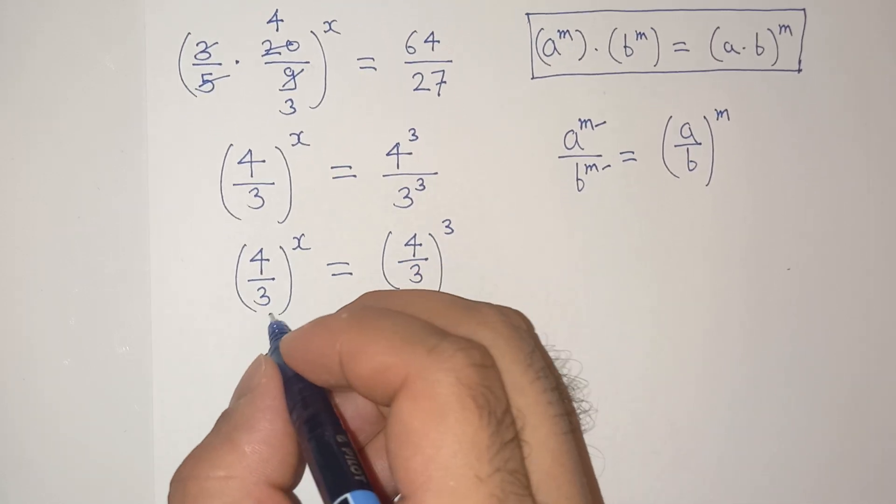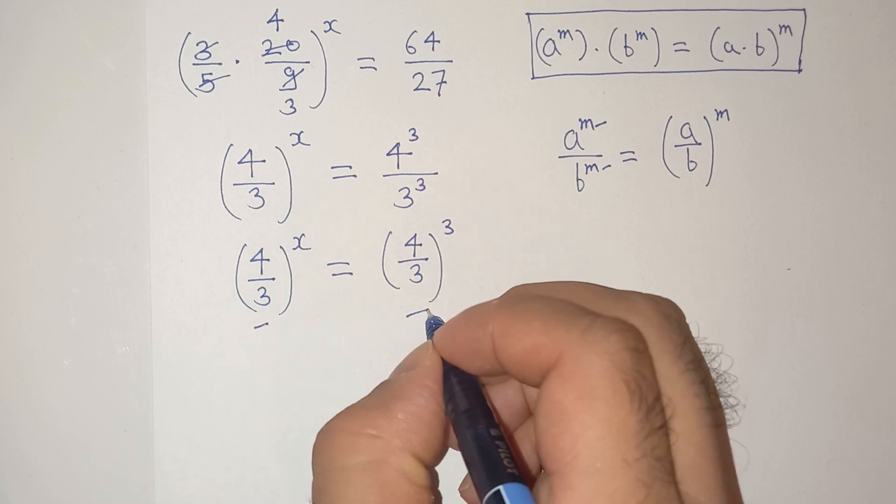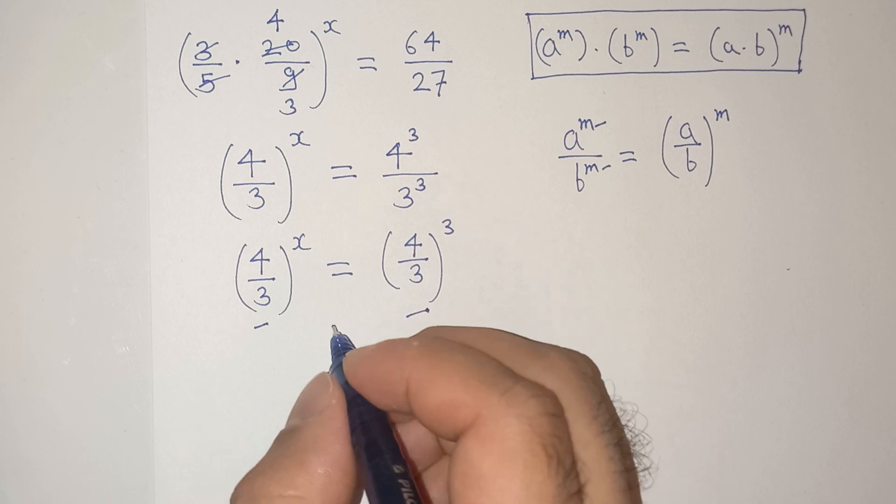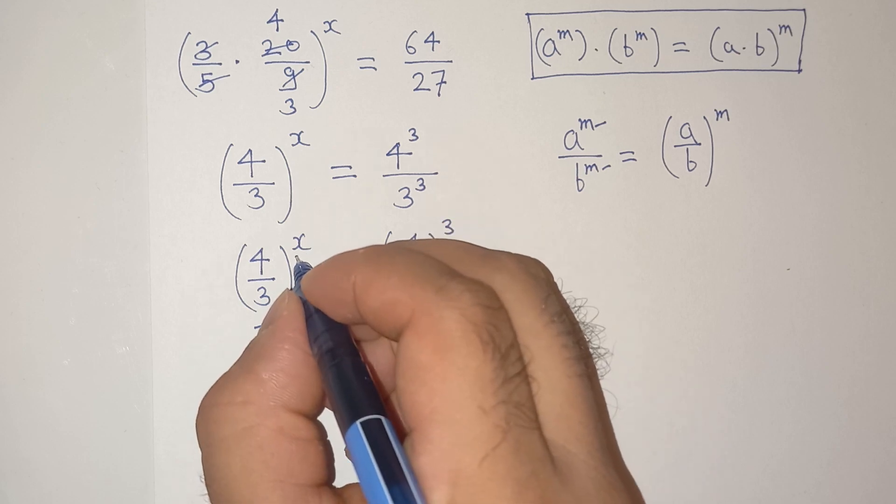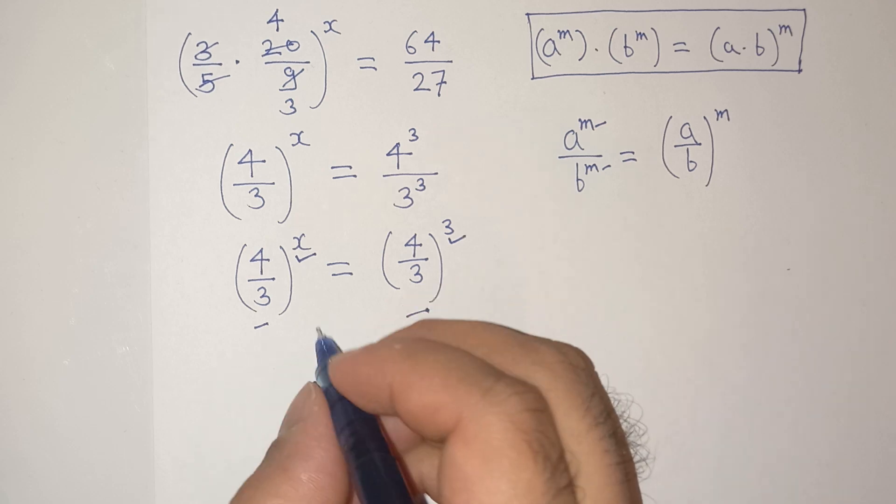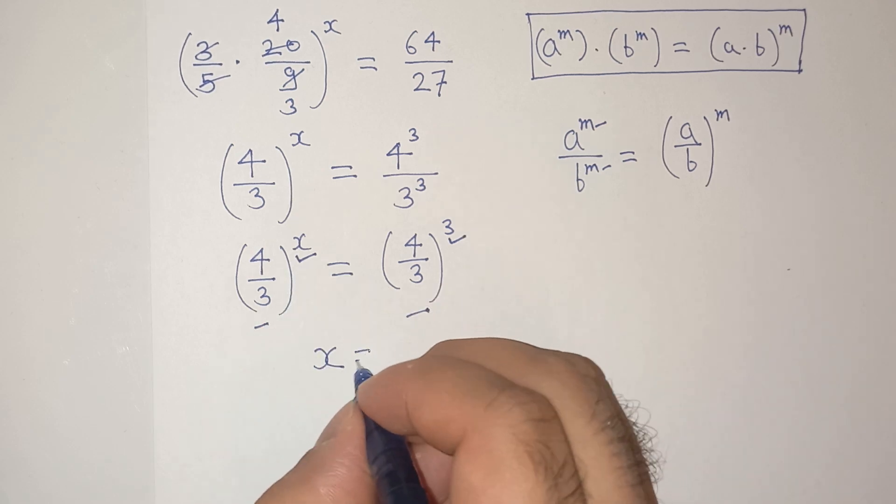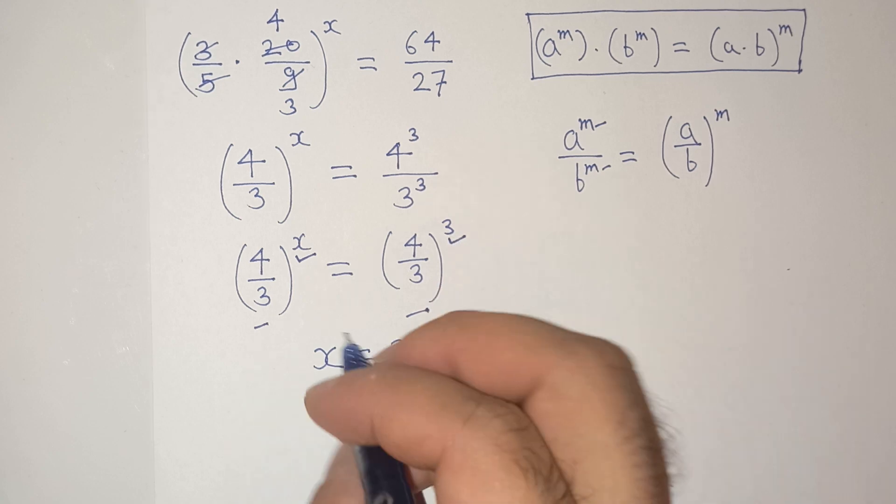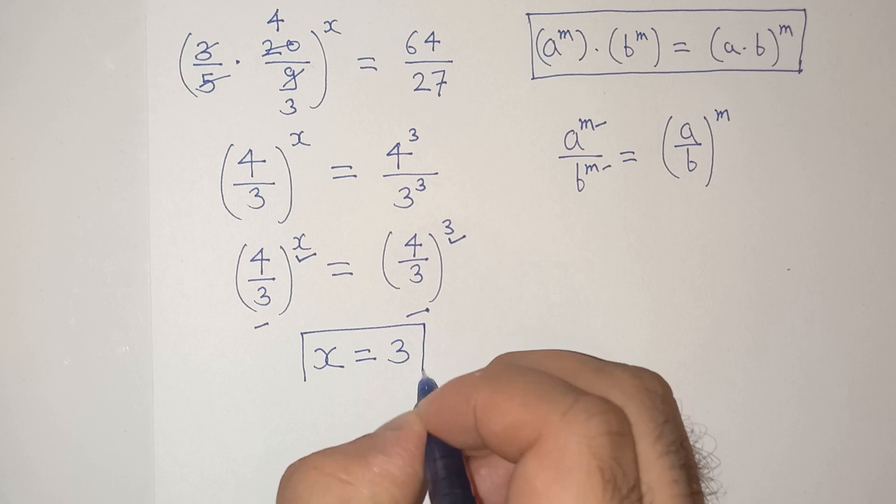Now, as you can see, on the left side and on the right side, the base is same which is 4 by 3. Which means that the exponent should also be same on the left side and on the right side. The exponent on the left side is x and the exponent on the right side is 3. So the value of x equals to 3.